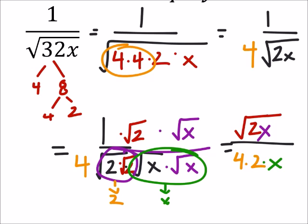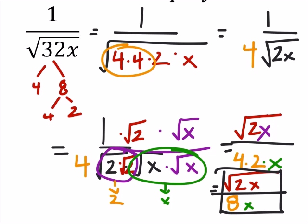So this ends up being the square root of 2x all over 4 times 2 is 8, and with the x. See, now that denominator is rational. It's formal, it's got a nice tuxedo with some wingtip shoes and it is ready to go to the dance.